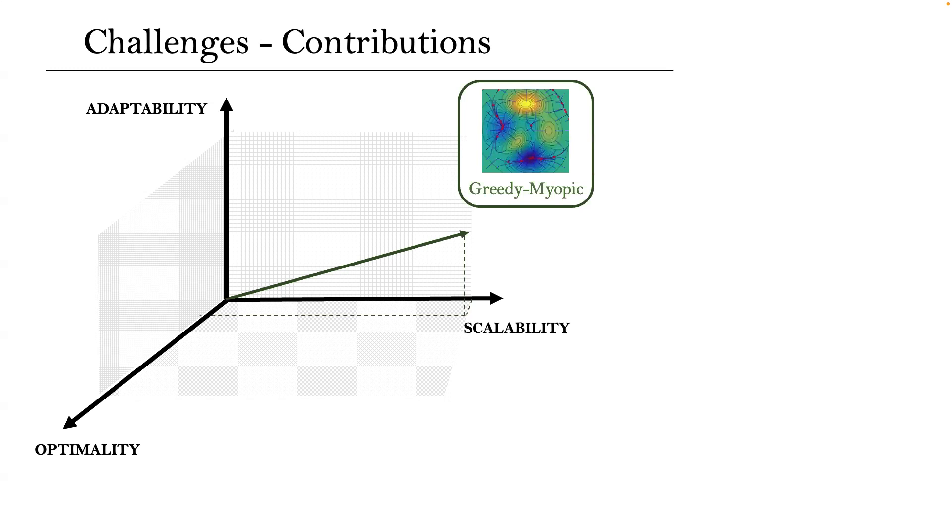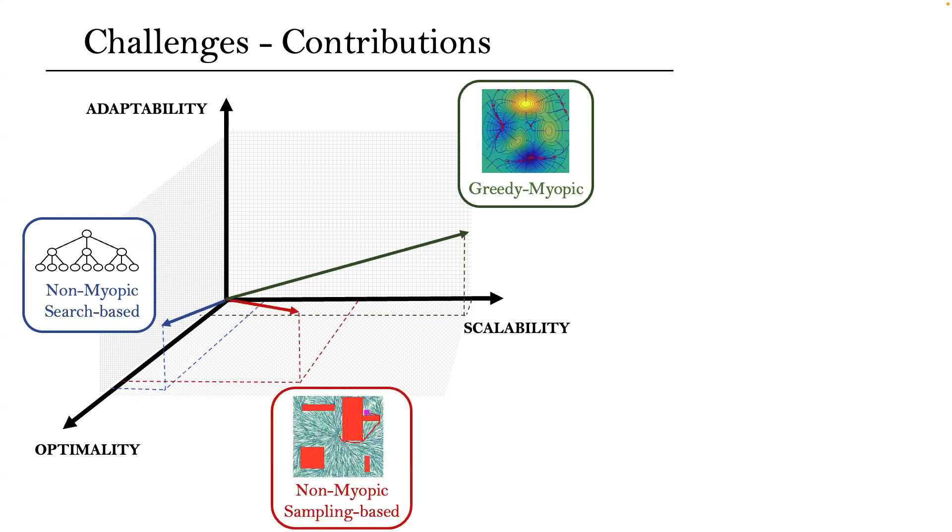Greedy approaches are typically computationally efficient but get trapped in local optima, while non-myopic search-based approaches sacrifice computational efficiency in favor of optimality. Non-myopic sample-based methods can find feasible solutions very fast, while recent learning-based approaches only work for a single robot.